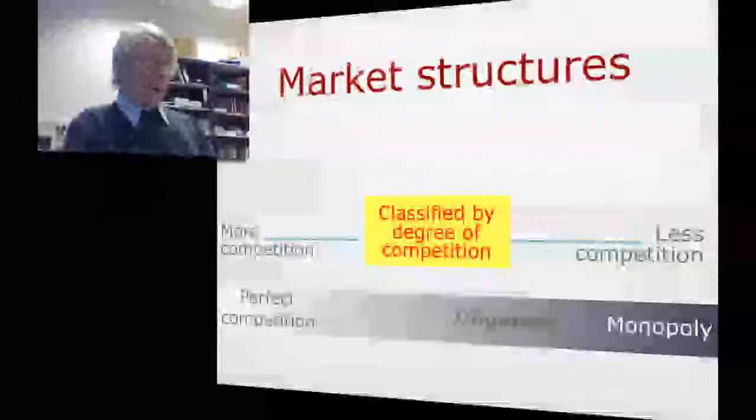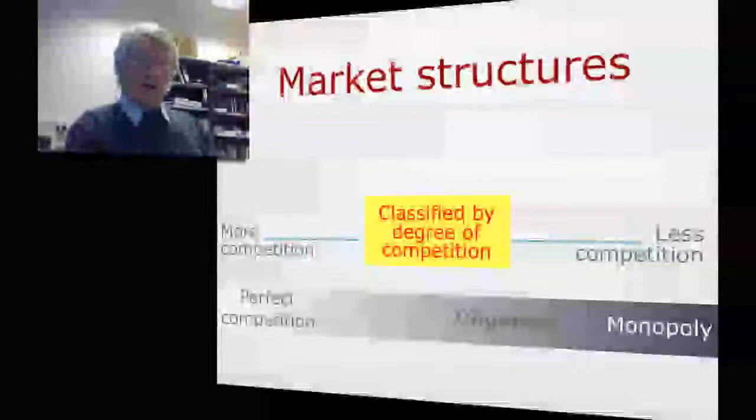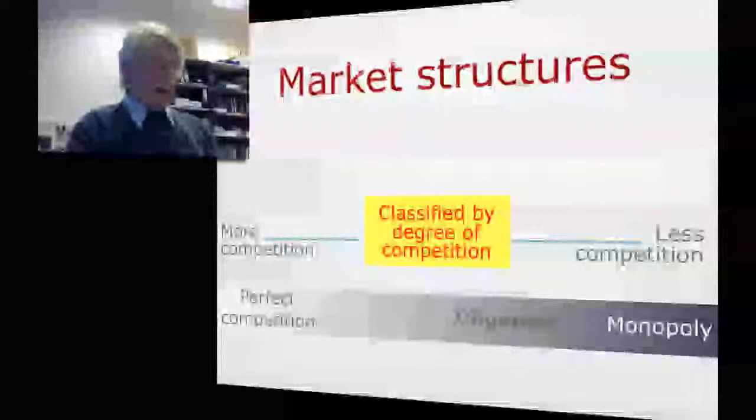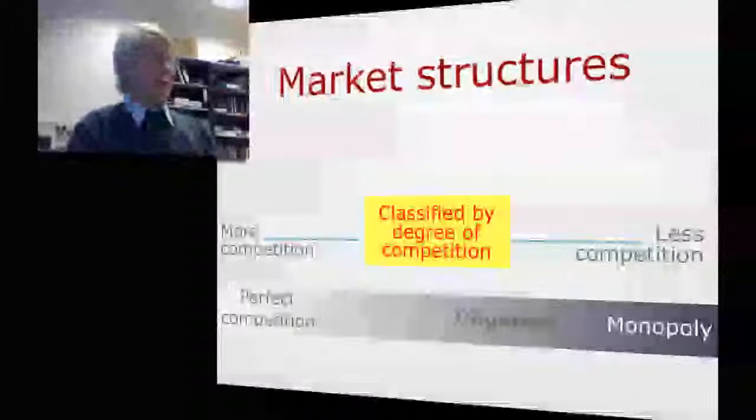Now the problem with this classification is it's quite useful for completeness but some parts are very impractical. The whole notion of perfect competition is a very theoretical thing. You're not going to find perfectly competitive markets in practice. The market structure that's close to perfect competition, monopolistic or imperfect competition, is also very unlikely to be found. So that leaves us two realistic market structures, oligopoly and monopoly.